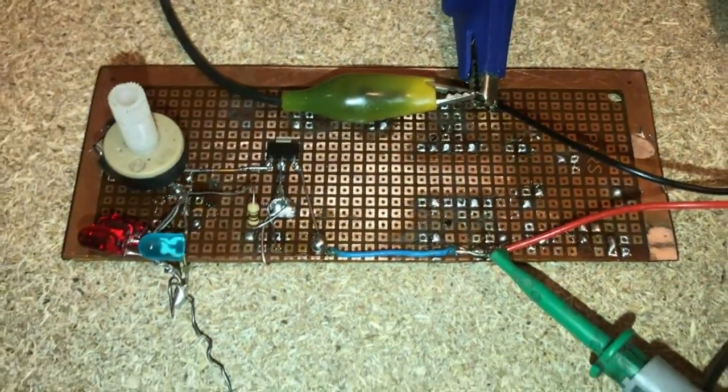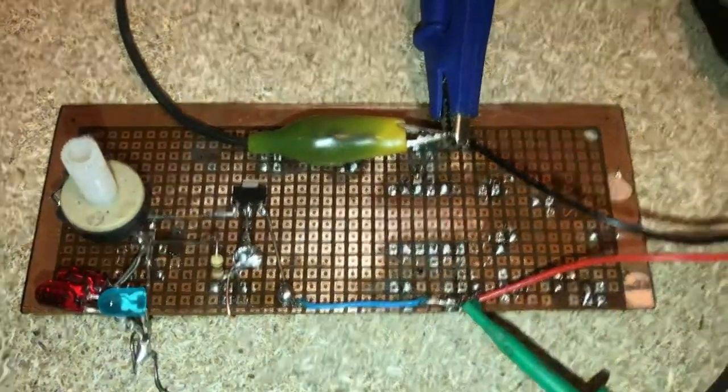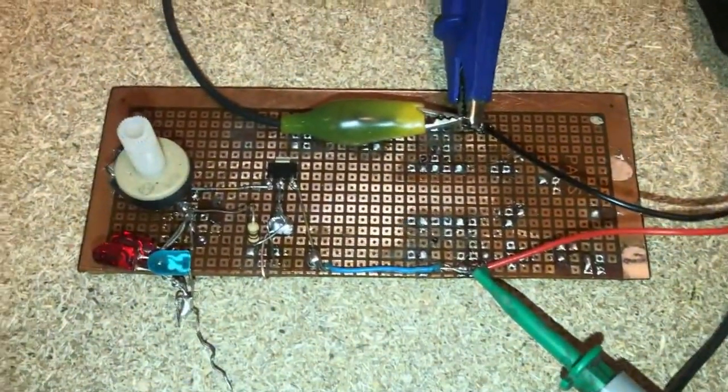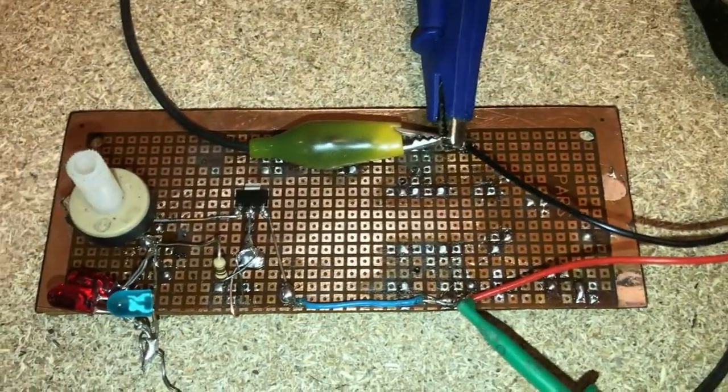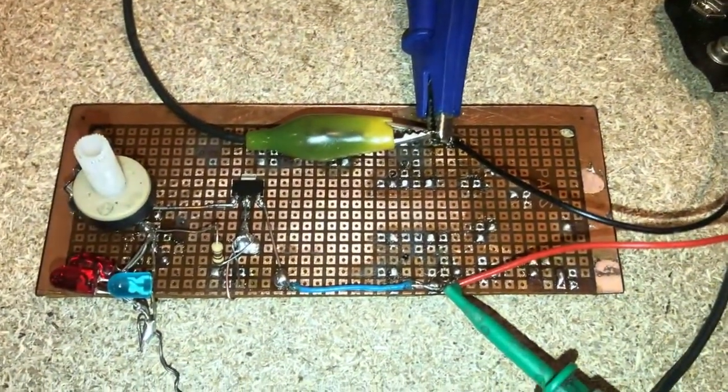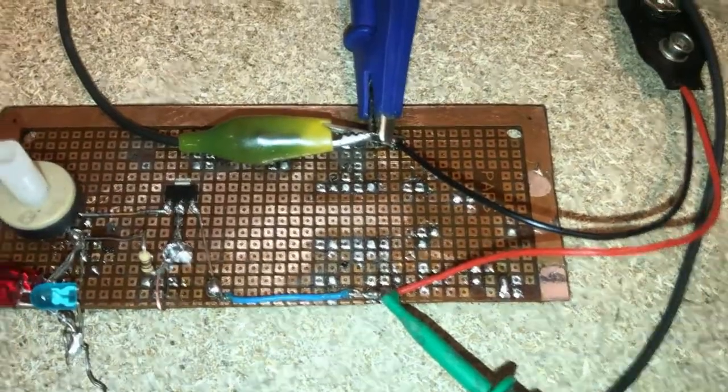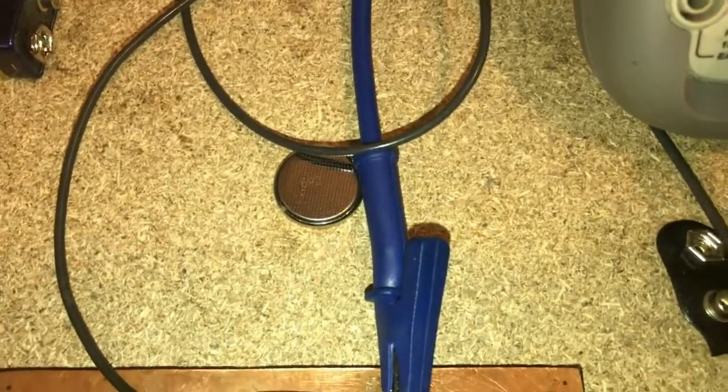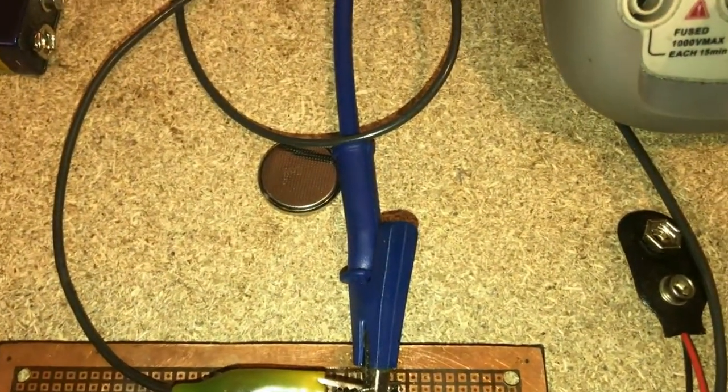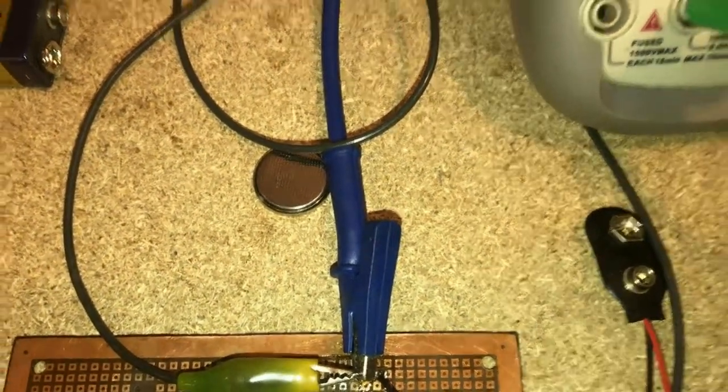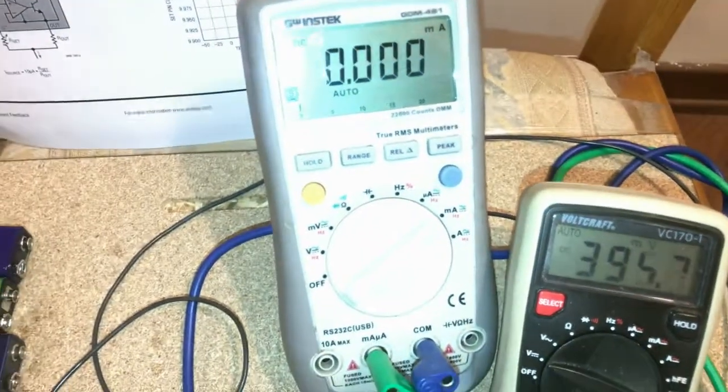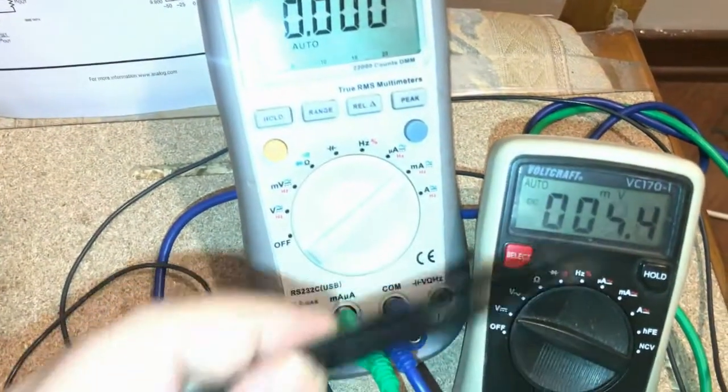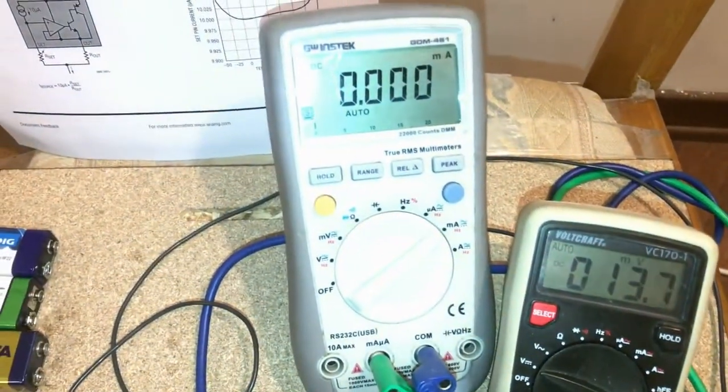As you can see, I have three LEDs here as a dummy load, one potentiometer to adjust the amount of current, and also I have three batteries and one coin battery to test the current limitation. The left meter shows current amount and the right one is voltage.